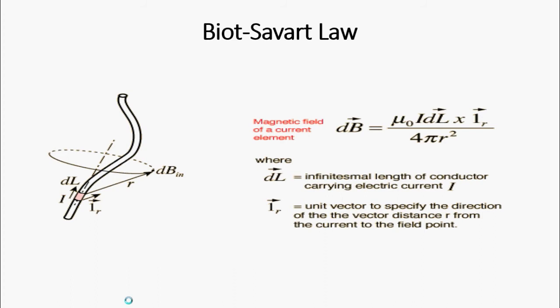This is an equation describing the magnetic field generated by an electric current. It relates the magnetic field to the magnitude, direction, length, and proximity of the electric current.